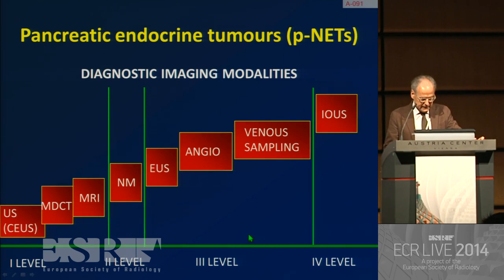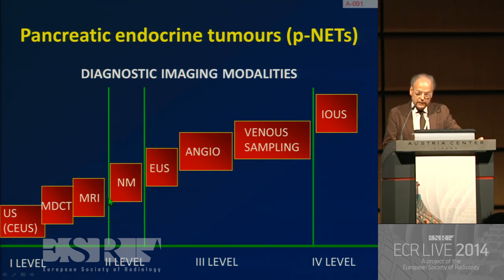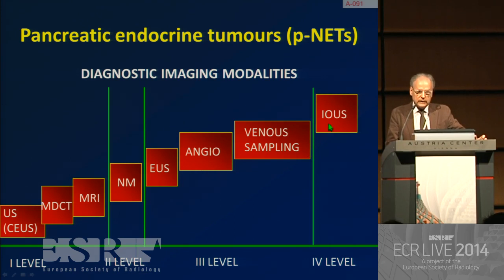We have a number of imaging modalities to study this neoplasm. We can arbitrarily divide these imaging techniques into four levels. The first level includes ultrasonography with contrast-enhanced ultrasonography, multi-detector computed tomography, and MRI. The second level is mainly nuclear medicine. At the third level, endoscopic ultrasound. Today we perform extremely rarely angiography and venous sampling. At the fourth level, we put intraoperative ultrasound, which is important for surgeons.